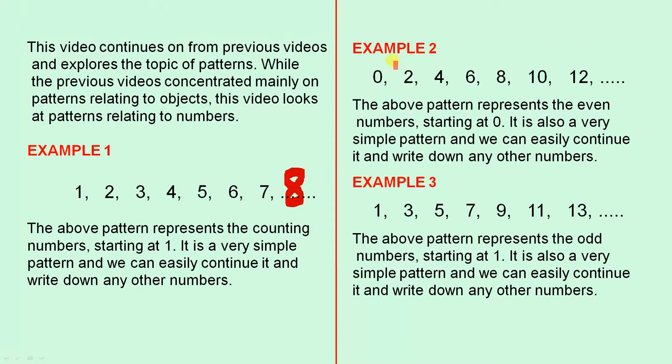Example 2, 0, 2, 4, 6, 8, 10, 12. The above pattern represents the even numbers starting at 0. So it's also straightforward and if we were to continue it on, with great confidence we can write that the next number was 14 and so on.